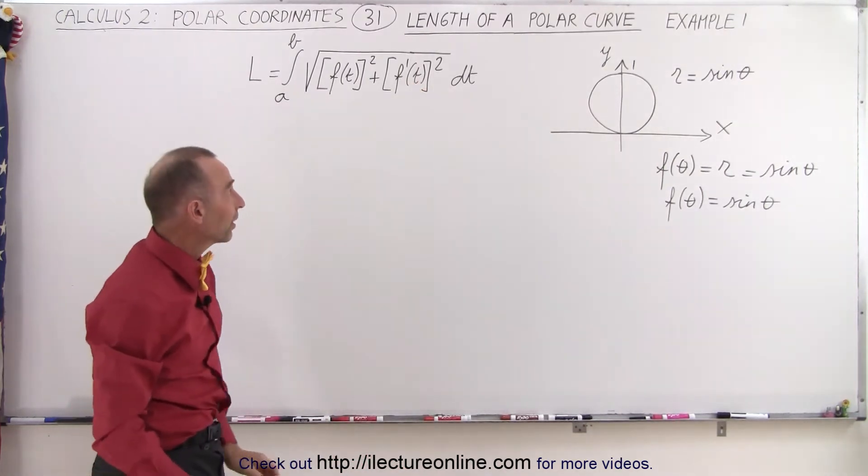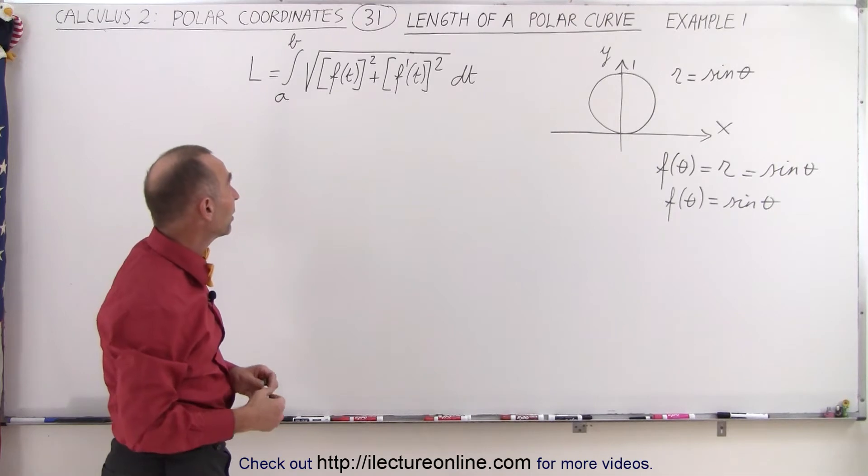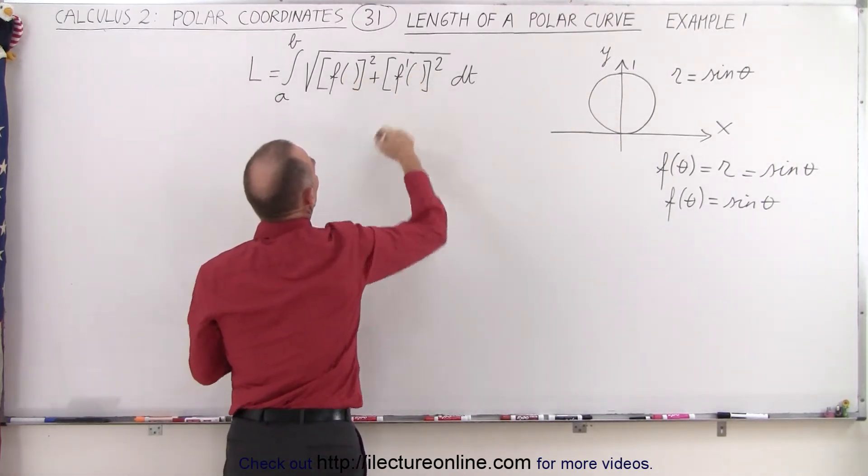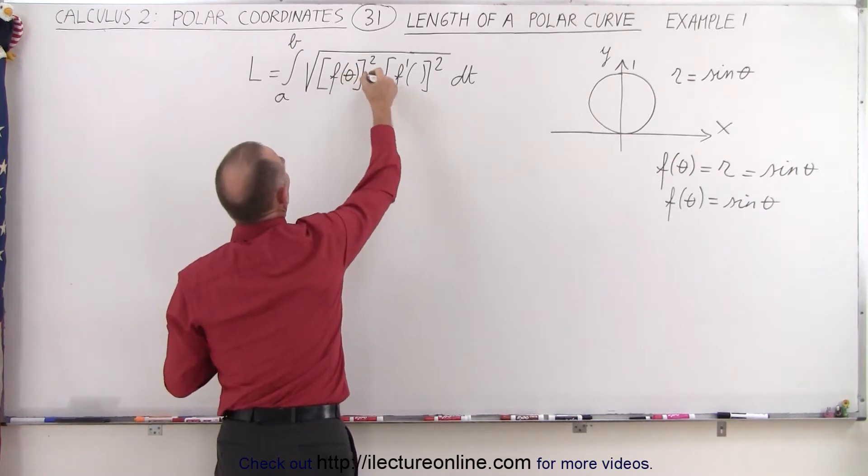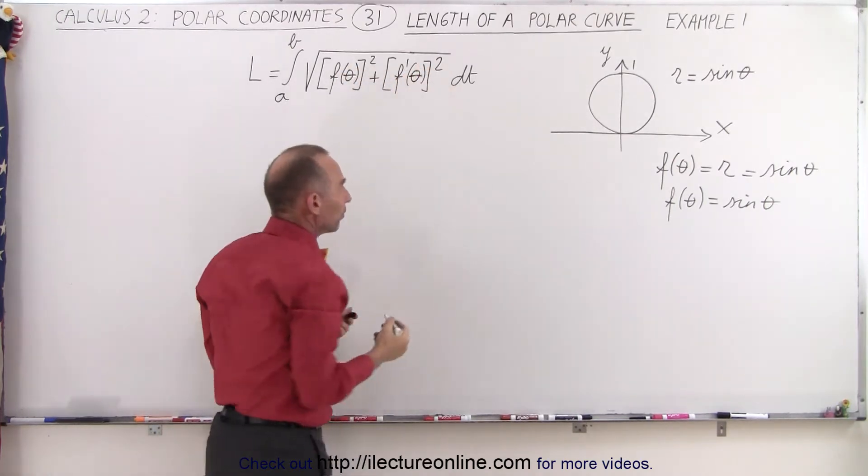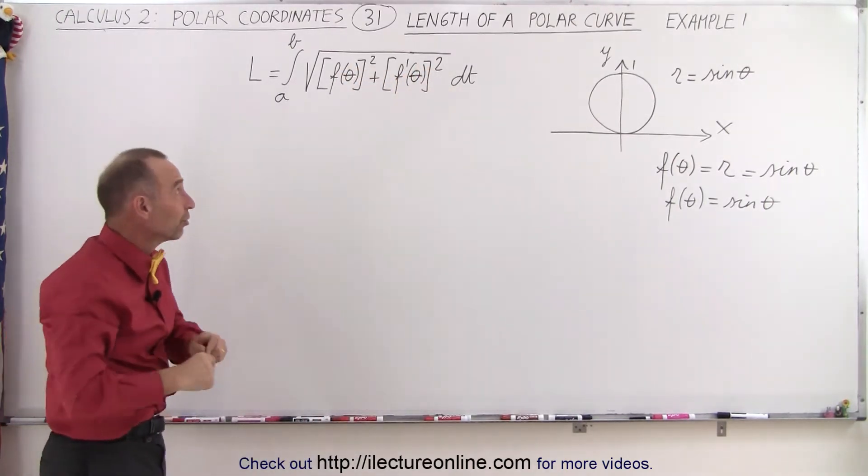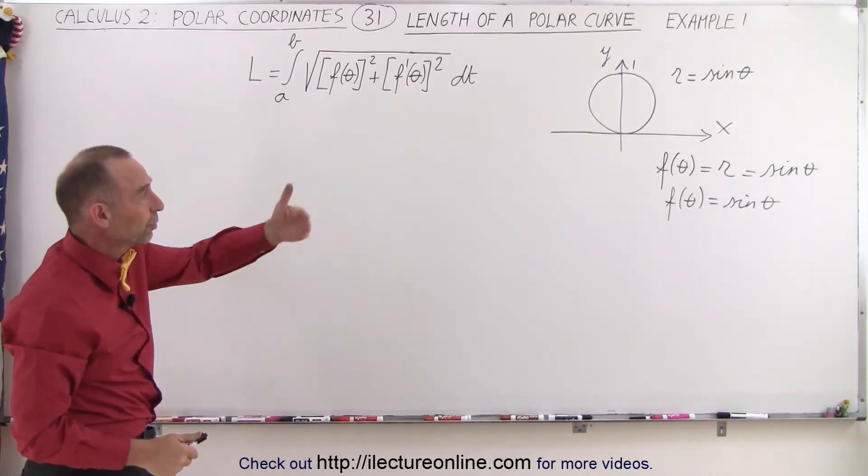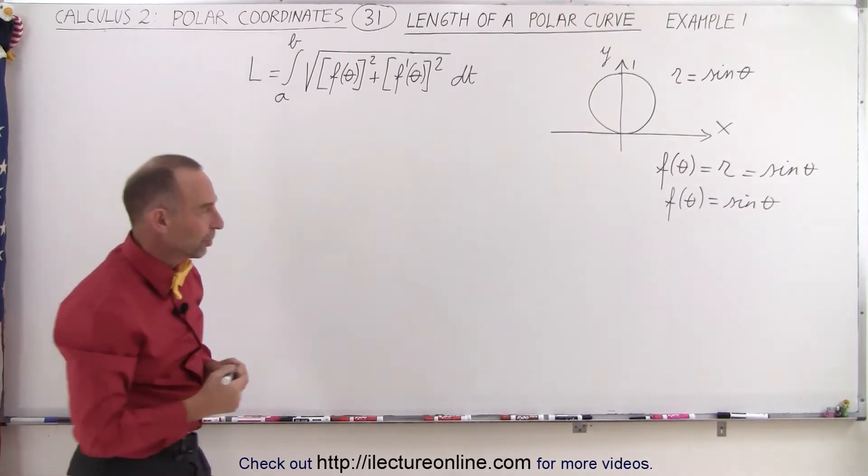So we already have the function of theta in this case. Let's use theta instead of t so that we don't have it too confusing. We can use any parametric variable, or in this case, since we're dealing with polar equations, we'll just go ahead and call it theta. And so all we have to do now is find the derivative of that, plug it in there, and do the integration.